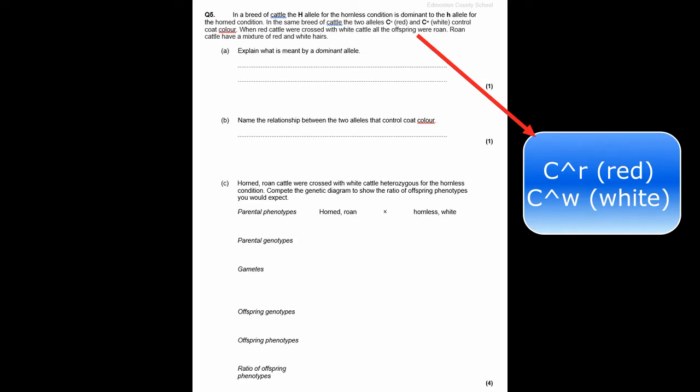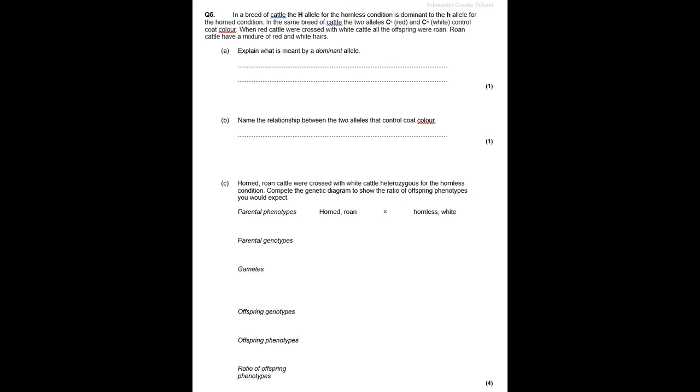So looking at our exam question here, the information tells us that there is a capital H allele for hornless, lowercase h allele for horned condition. But there is also a C superscript R for red and C superscript W for white coat. So please make sure that you understand then that by looking at this superscript, it's already telling us that there must be some co-dominance that's involved. So our question A says, explain what is meant by a dominant allele. Dominant allele from GCSE, we realize that it's always expressed in the phenotype.